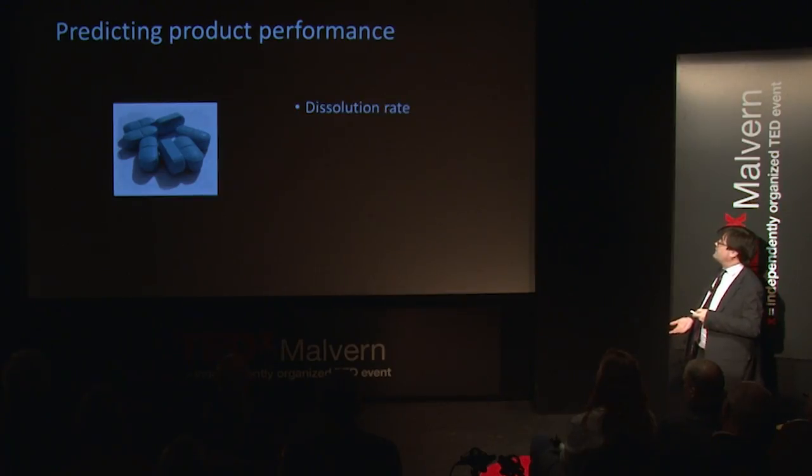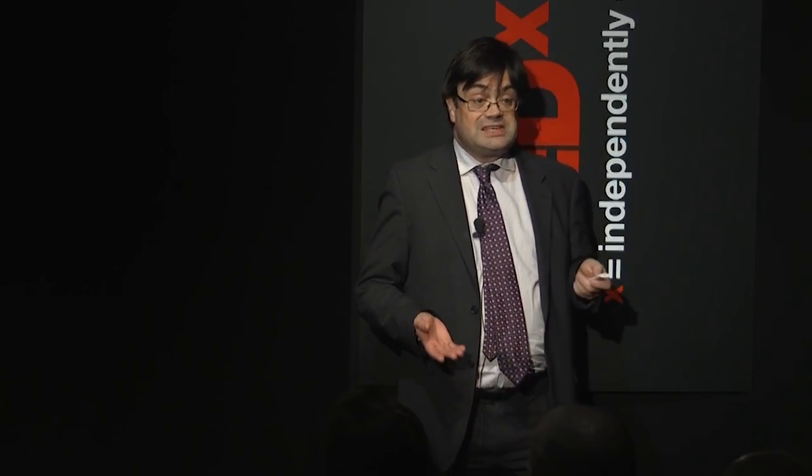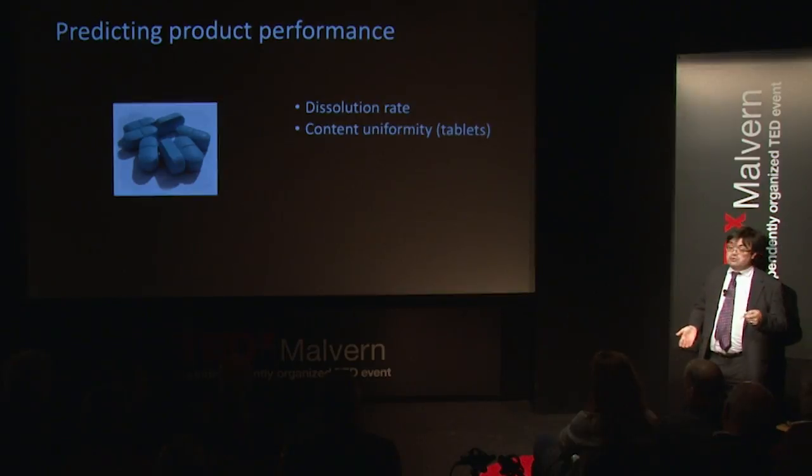For a drug, you need to predict how it's going to dissolve, because if things are the wrong size it may dissolve too quickly and the drug could end up in the wrong part of the body. Content uniformity in tablets is also critical — a tablet consists of things like lactose, a sugar, and the active ingredient. You want every tablet to be the same, with the right amount of each ingredient, just like making a cake.